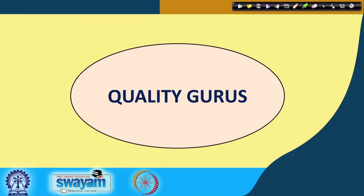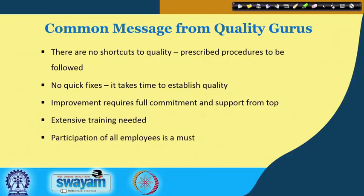Let us see the contributions of quality gurus and what they reflect upon the concept of quality. There are some common messages. Number one: there are no shortcuts to quality — prescribed procedures must be followed. You must believe in your SOP, your quality documents, vision, mission, and objectives. You cannot adopt a shortcut to realize sustainable quality in your organization.